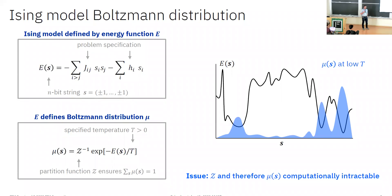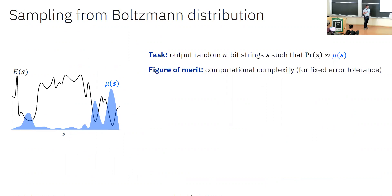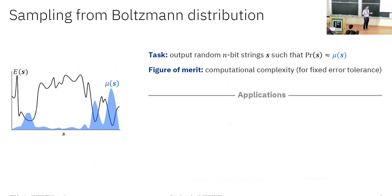Nonetheless, the task we're considering is to sample from this distribution — the goal is to output random n-bit strings such that the probability of outputting some n-bit string s is equal to the corresponding Boltzmann probability of s, perhaps to within some desired error tolerance. The main figure of merit we'll be concerned with is the number of computational steps required to produce these samples. And if you've never encountered this problem before, it might seem esoteric — but I assure you it actually arises in a few different applications.